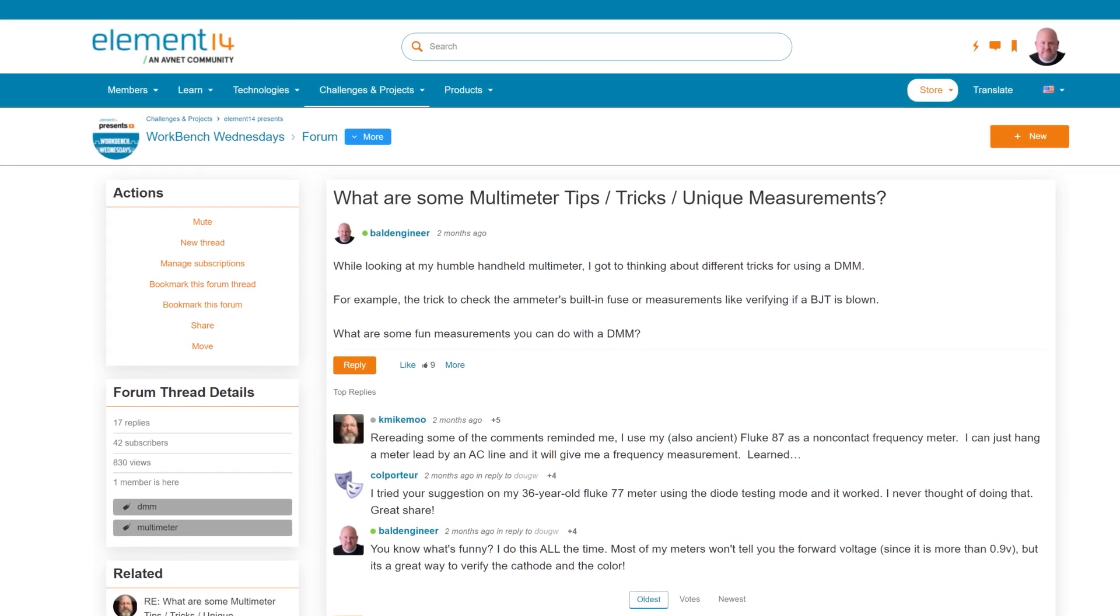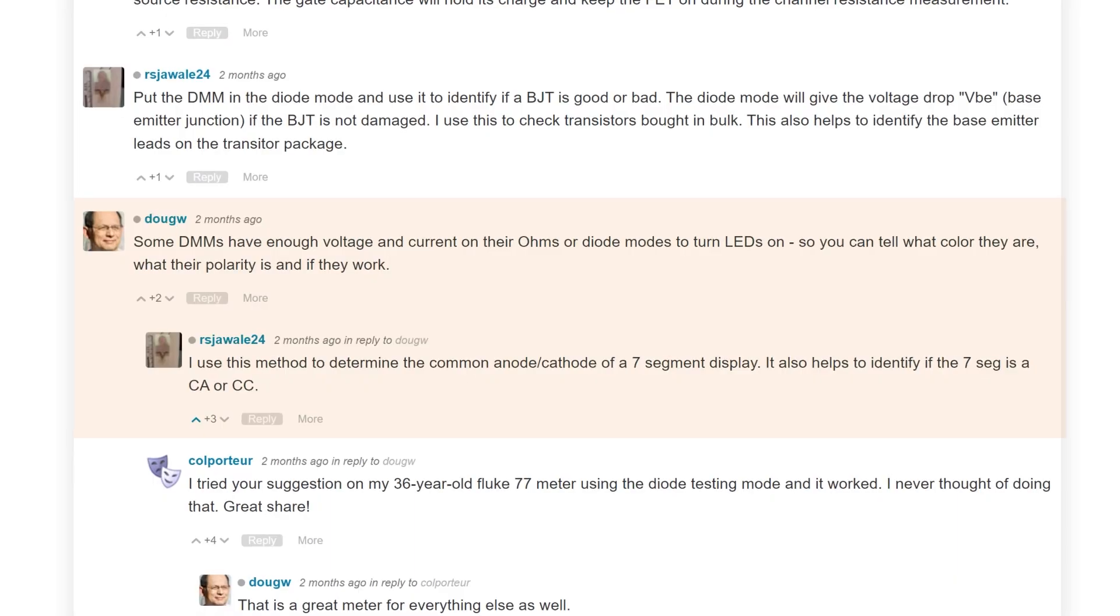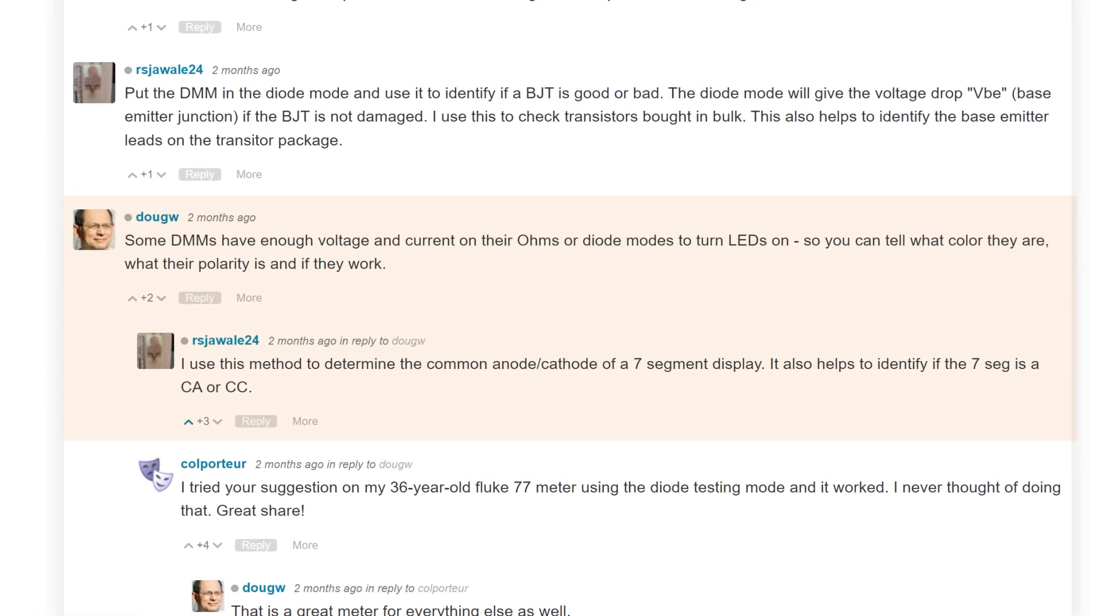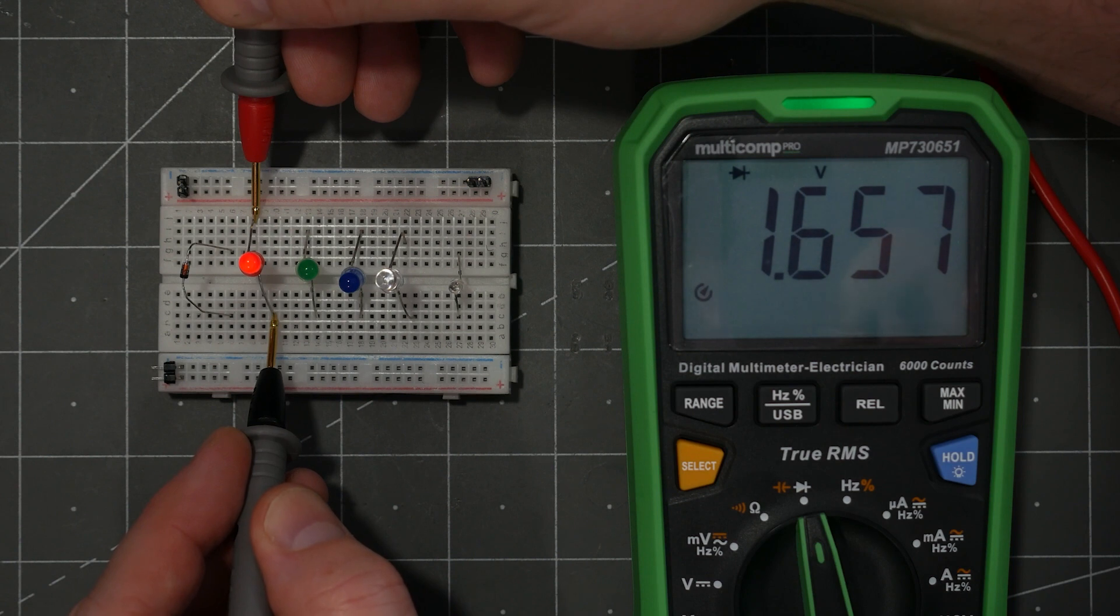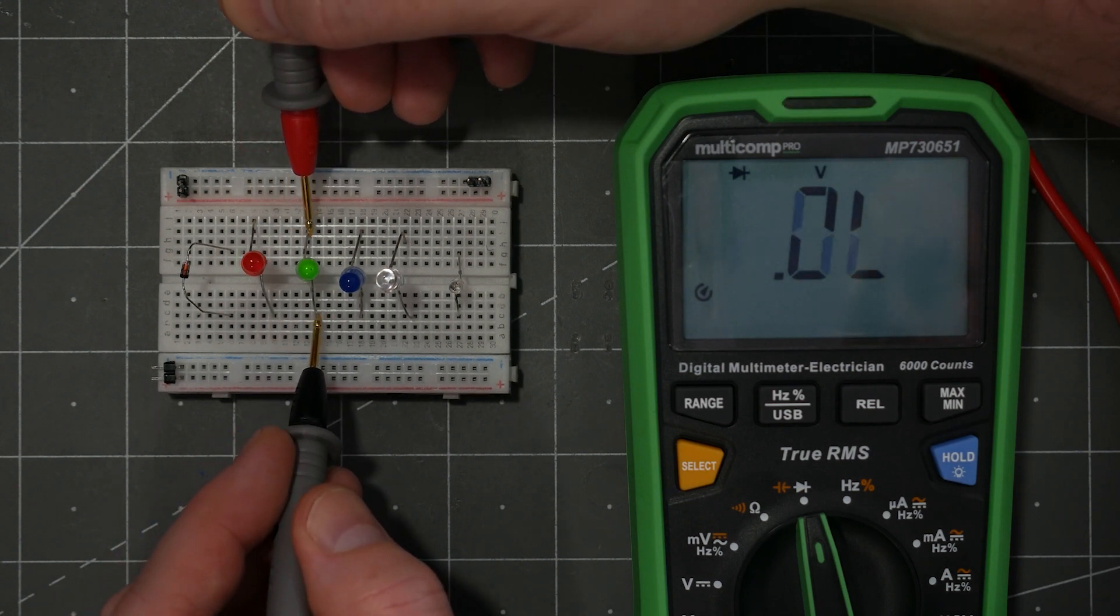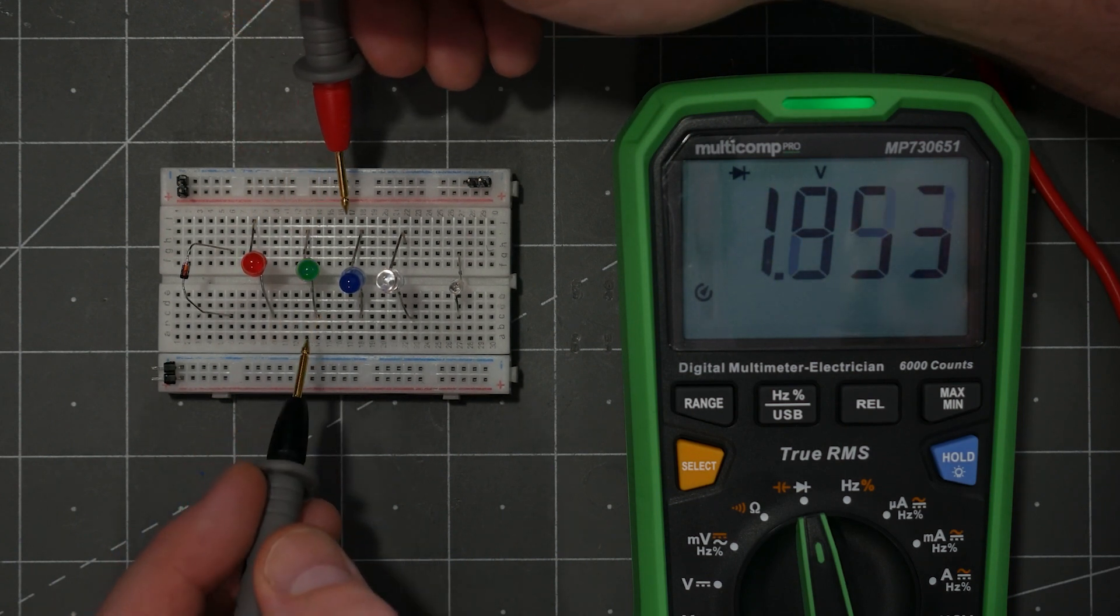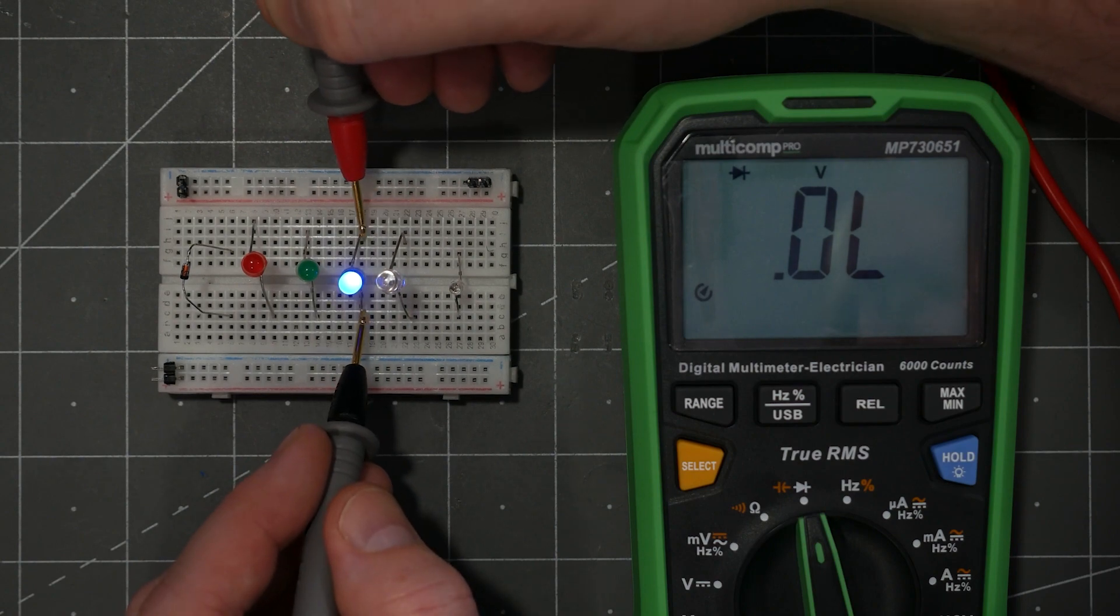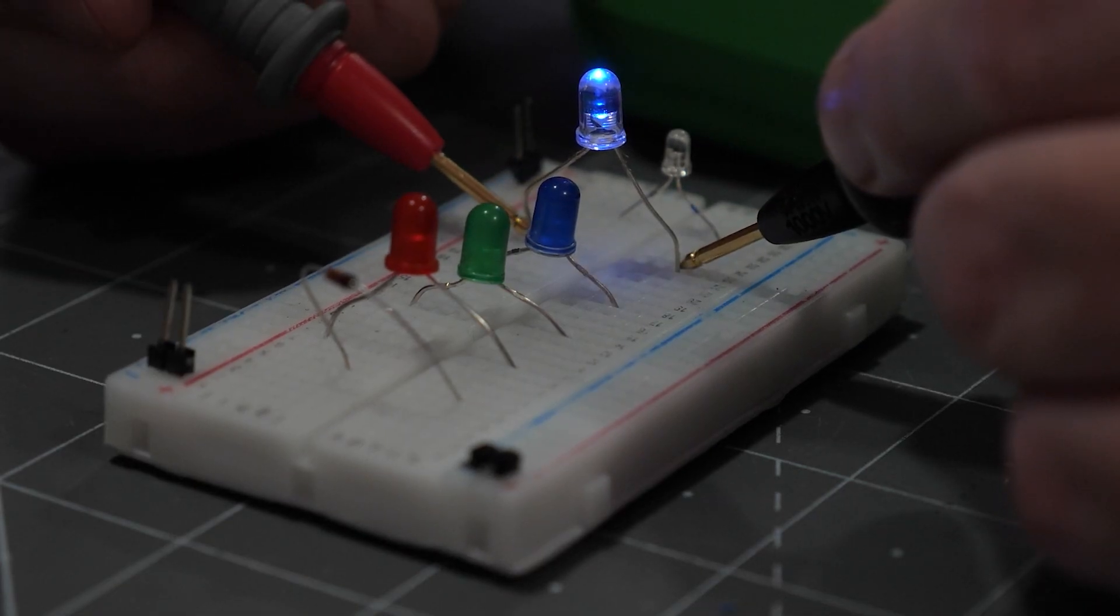However, the tip I wanted to point out came from the community. Use your DMM to determine an LED's color. When biased correctly, LEDs light up and the DMM shows their forward voltage. Some DMMs max out at 1 volt in diode mode, but they still can light up even a blue LED.